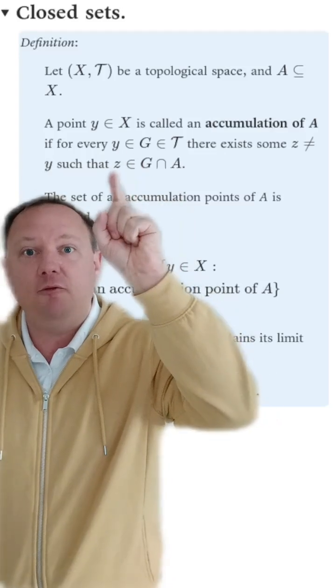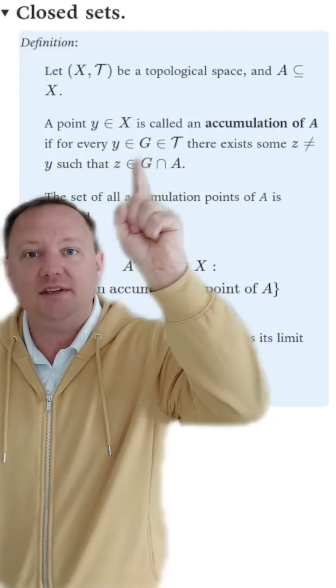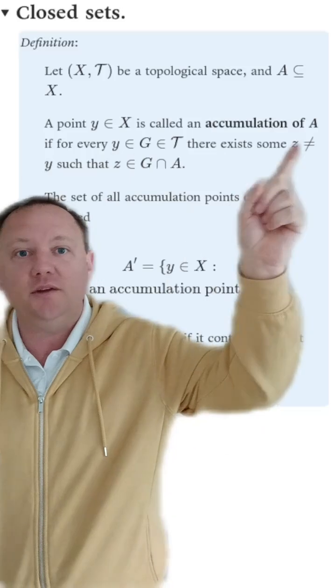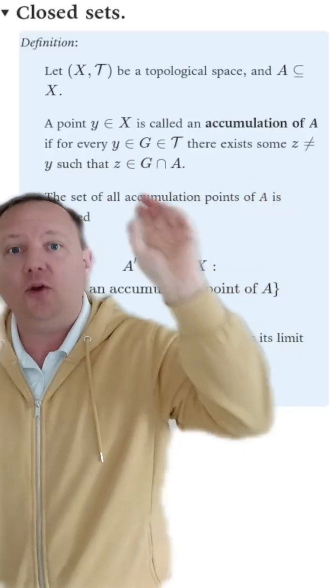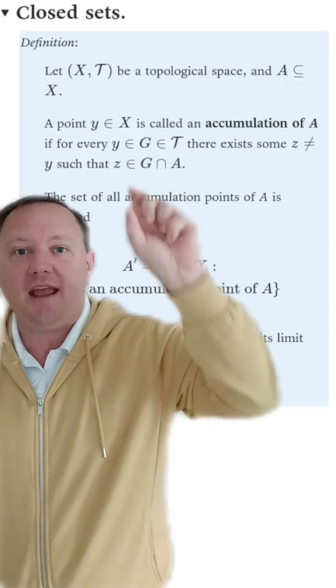Y is an accumulation point of A if for every possible open set that contains Y, there is always some other point that is in both G and A.